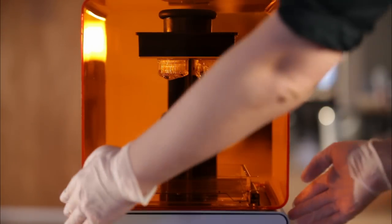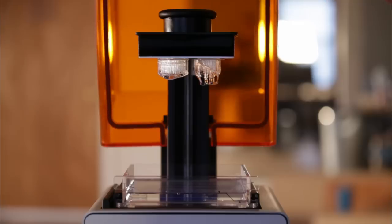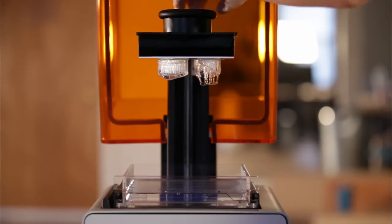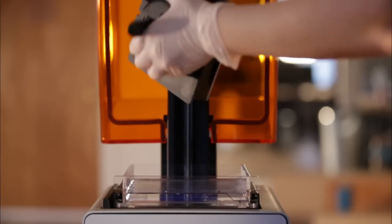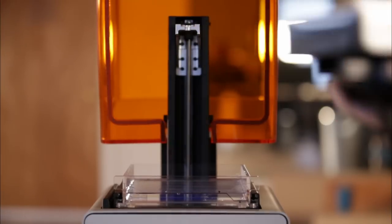Always wear disposable gloves when handling uncured resin. Open the cover and unclamp the build platform. Turn the platform over so that no resin drips. Transfer the build platform to the finishing tray.